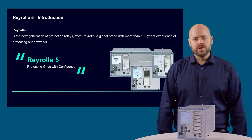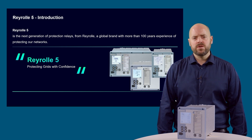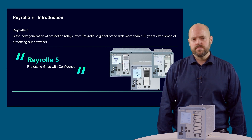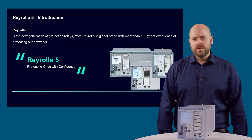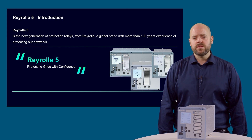This reduces training requirements and provides a cost-effective solution. Our experience in protection development for over 100 years combined with the latest technology allows us to bring you a comprehensive device using proven algorithms in protection, control and supervision functions, ensuring reliable operation. As with other Reiro 5 devices, the 7SR57 is available in three case sizes: S6, S8 and S12, suitable for panel or rack mounting.